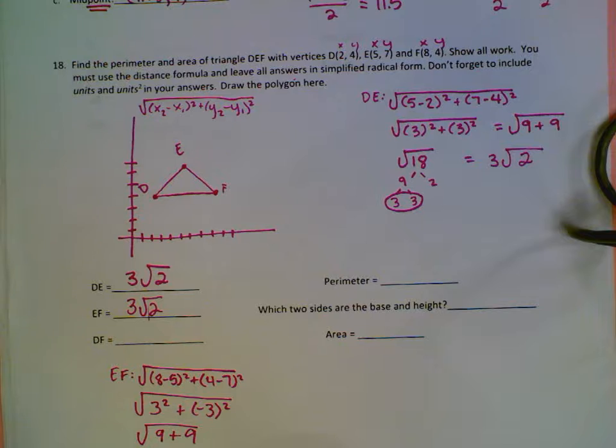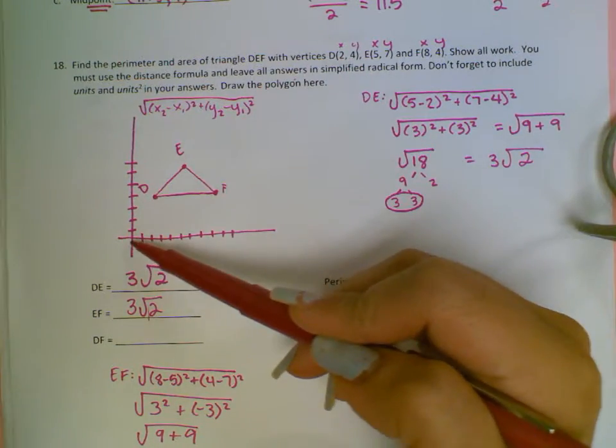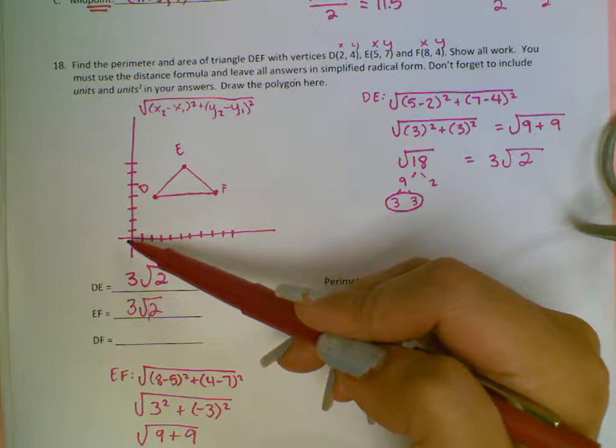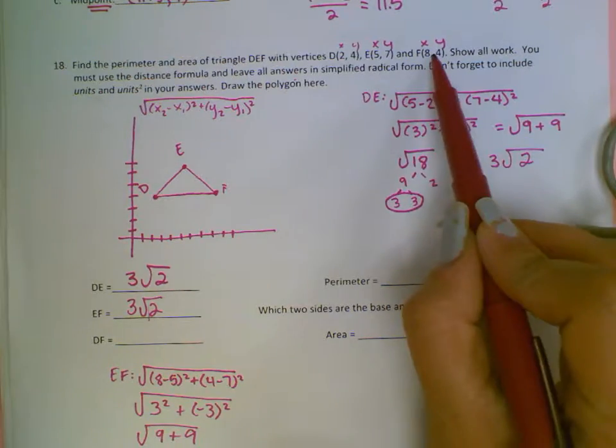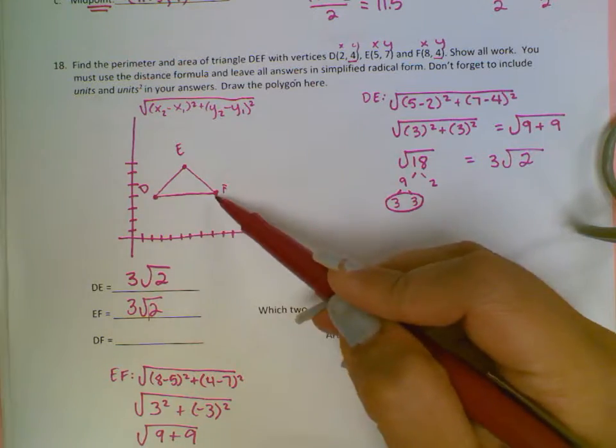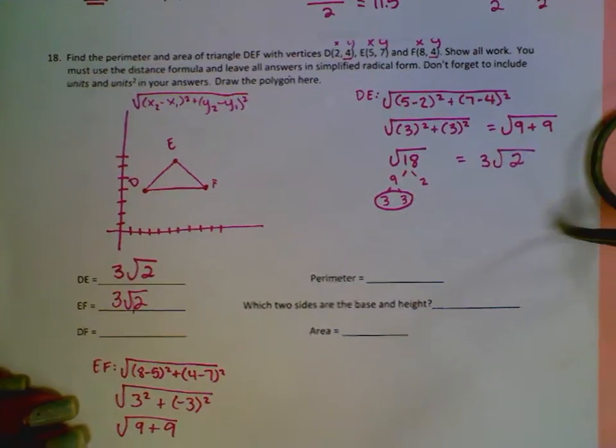Then I need to find the distance for DF. So for the distance of DF, I will use the distance formula. Or I could say D is at 2, 4, and F is at 8, 4. Since they both share this 4, I can just say to get from 2 to 8, I went straight across, which will give me a length of 6. But they told us to use the distance formula, so we can do that real quick.